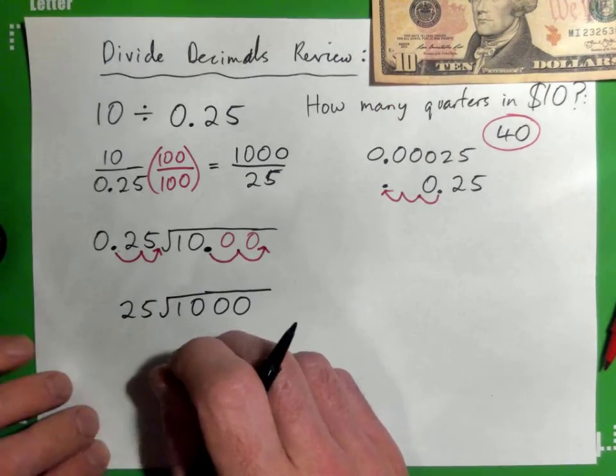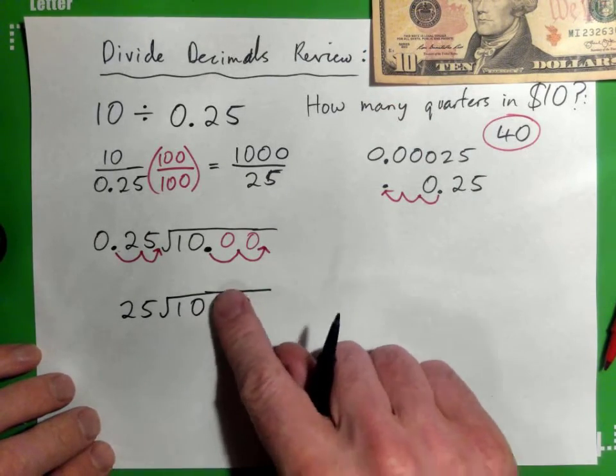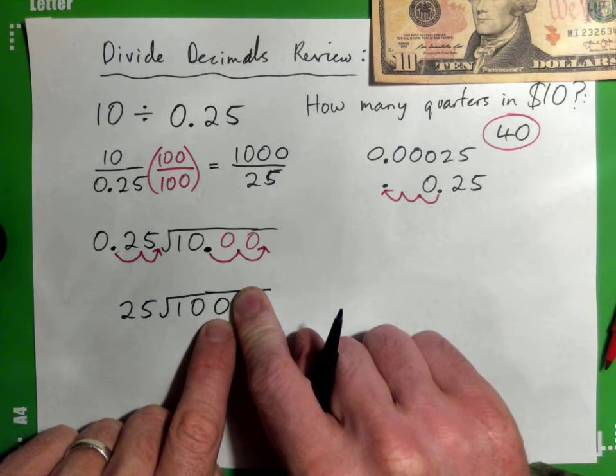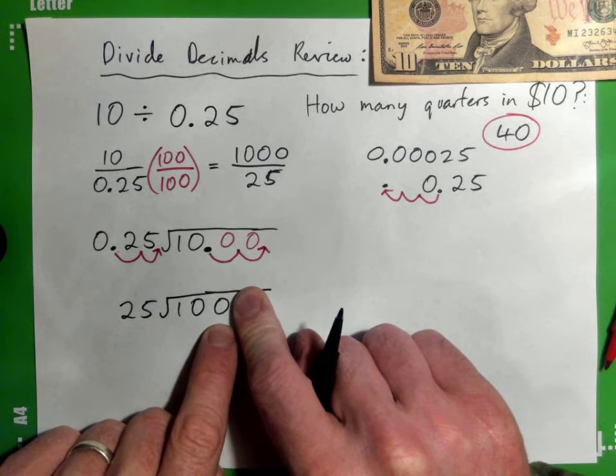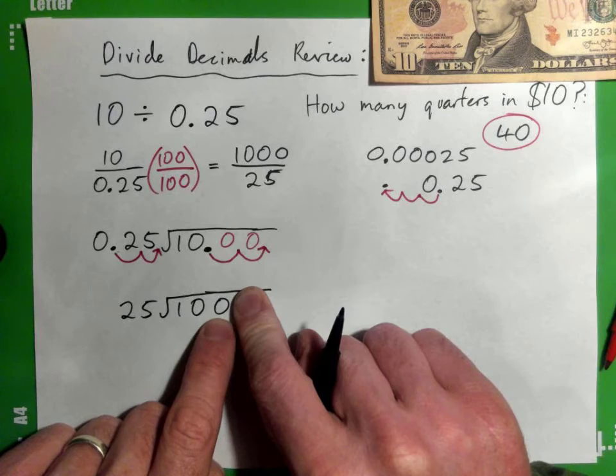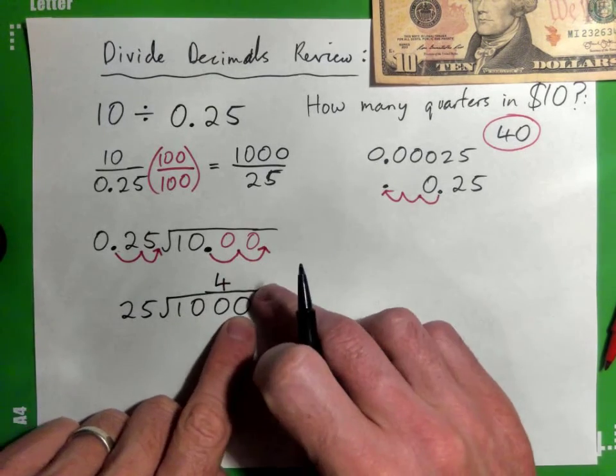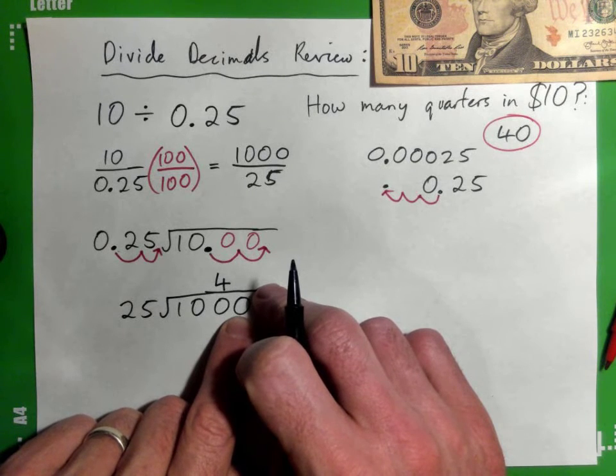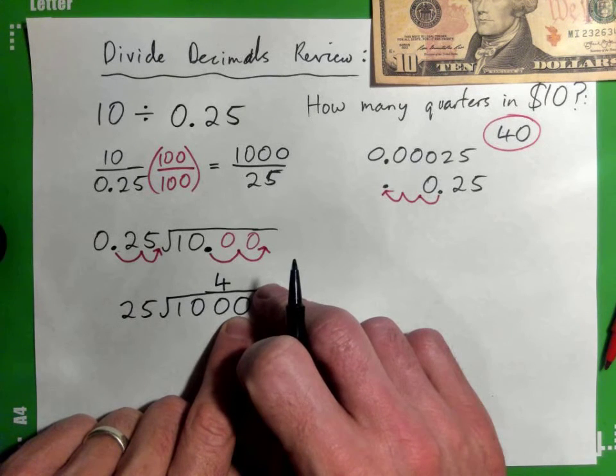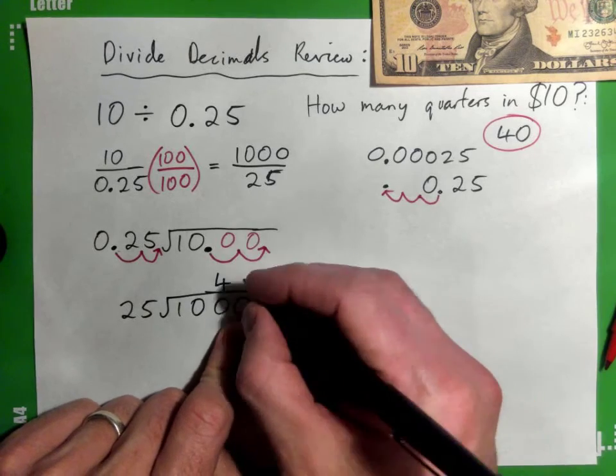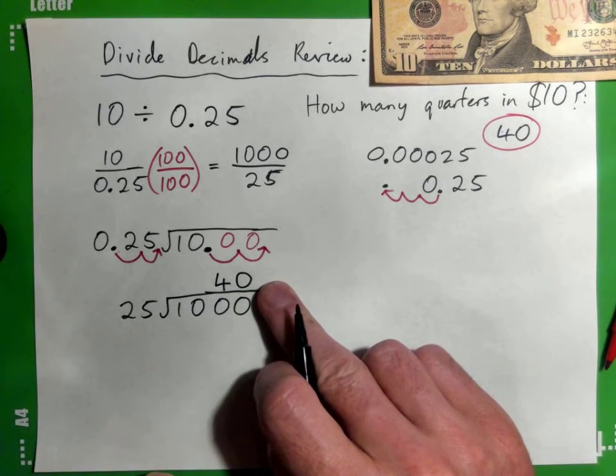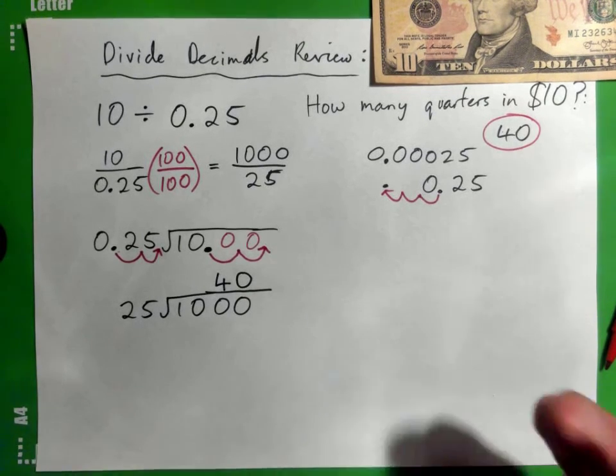25 into 10 won't go. What's 25 into 100? You all agree on that, it's definitely four. Take your time, write it down: 25 into 0 is 0. So what's our answer? 40.